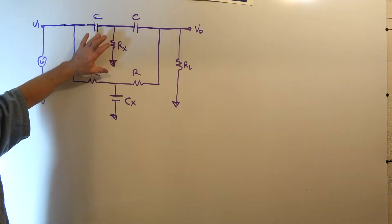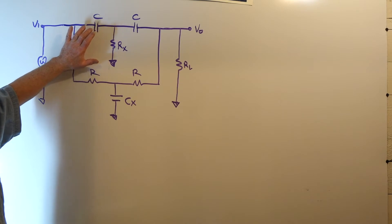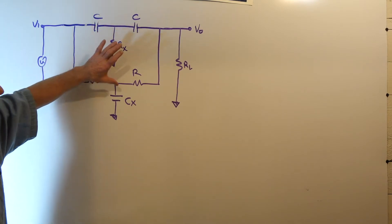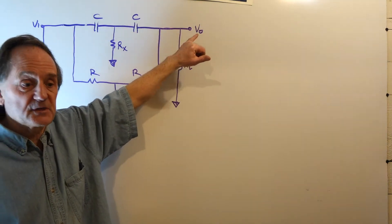There's a relationship between RX and CX with respect to R and C of these two legs in which the voltage will null out. It will go to zero.